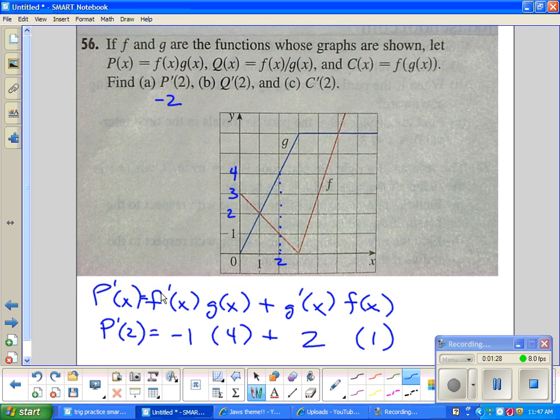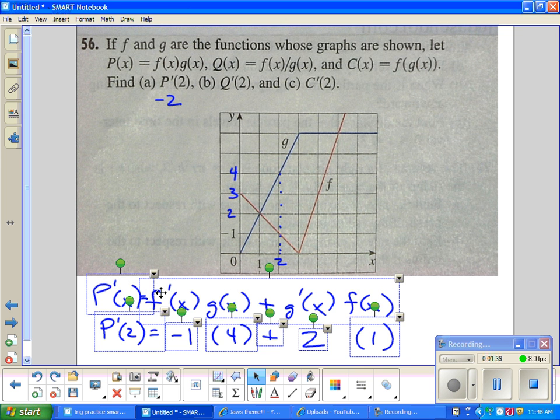2 over 1. Yep. So the slope is 2. Alright. So there's the answer to problem A. Okay. What's problem B using? What's problem B?